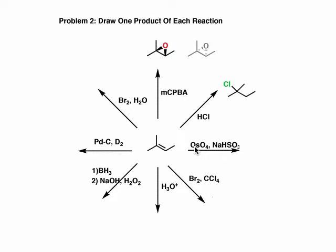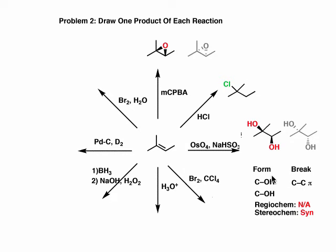Let's look at this reaction with OsO4 and NaHSO3. OsO4 is osmium tetroxide, and NaHSO3 is sodium bisulfite — it's sometimes seen along with osmium and is used to get the osmium off the oxygens at the end. Notice that we're breaking the carbon-carbon pi bond and forming a carbon-oxygen bond on both carbons. This reaction is called dihydroxylation because we are forming two hydroxyl groups. This product is called a diol, or usually a vicinal diol, to say that those alcohols are on adjacent carbons. I draw two products again — just like with the epoxidation example — they might look the same but they're actually enantiomers of each other.